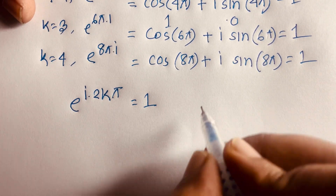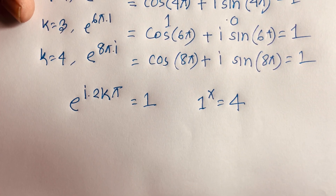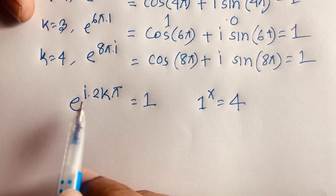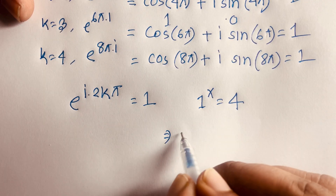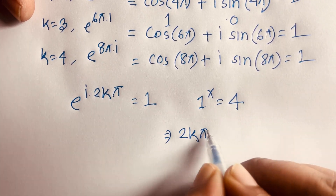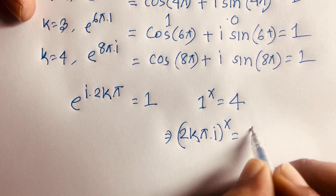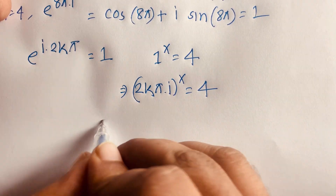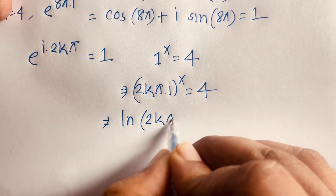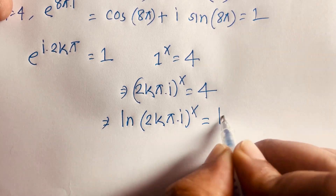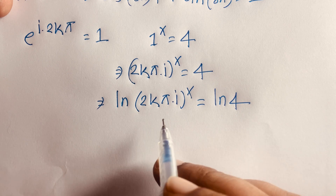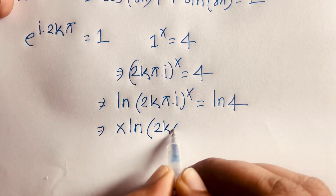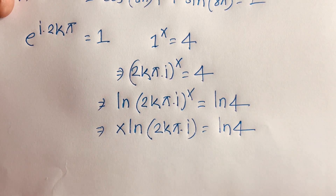Our question is 1 to the power x equals 4. So I can say 1 equals e^(i·2kπ), therefore (e^(i·2kπ))^x equals 4. Taking the natural log of both sides and applying logarithm rules, the exponent moves to the front: x·ln(i·2kπ) equals ln 4.